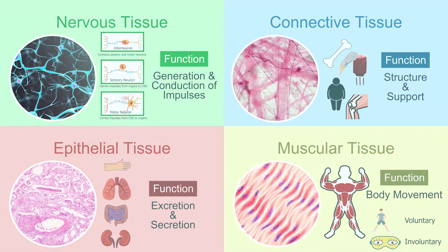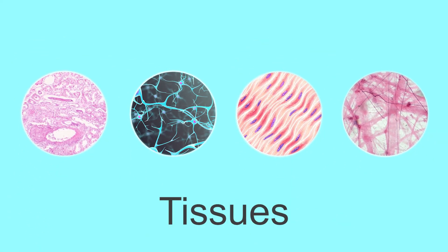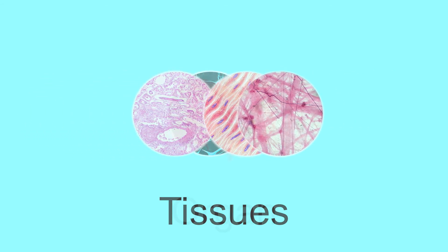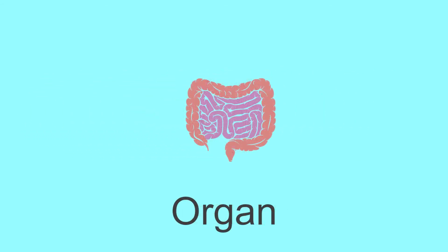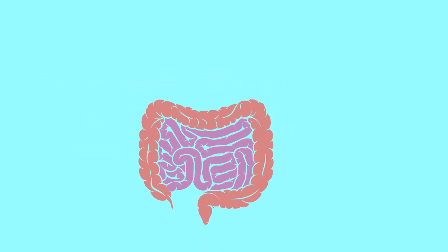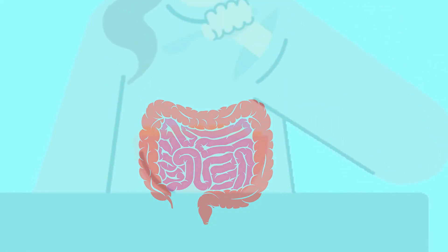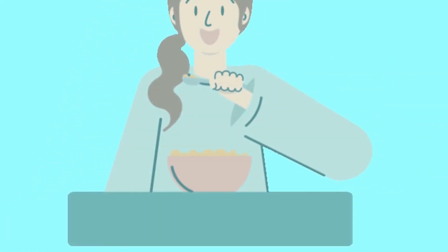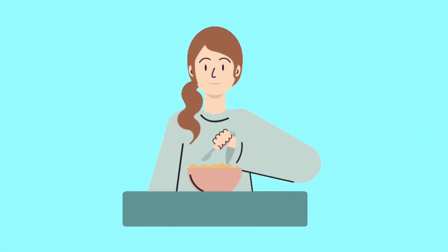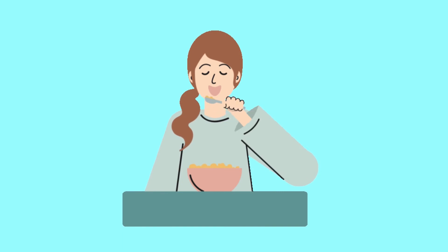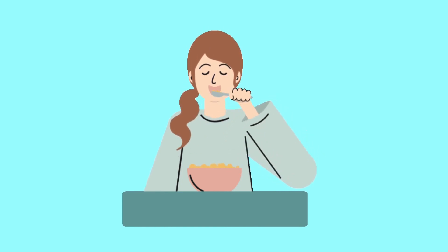A collection of tissues grouped together performing a common function is called an organ. For example, the small intestine is an animal organ that is composed of smooth muscles, blood vessels, and nervous tissues working together to digest food.